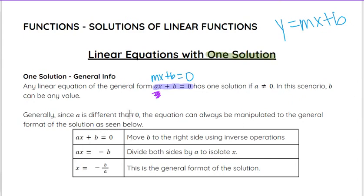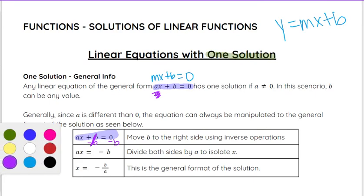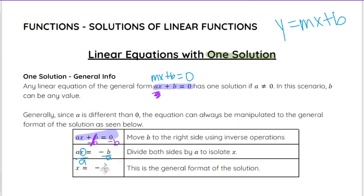Generally, since A is different than 0, the equation can always be manipulated to the general format. So we start with AX plus B equals 0, and then we move that plus B by subtracting B from both sides, and 0 minus B is negative B. B minus B cancels out, and we just have AX equals negative B. Then we want to isolate the X, and to do that we divide by the number in front, which is A. So negative B over A is the general format of that solution.